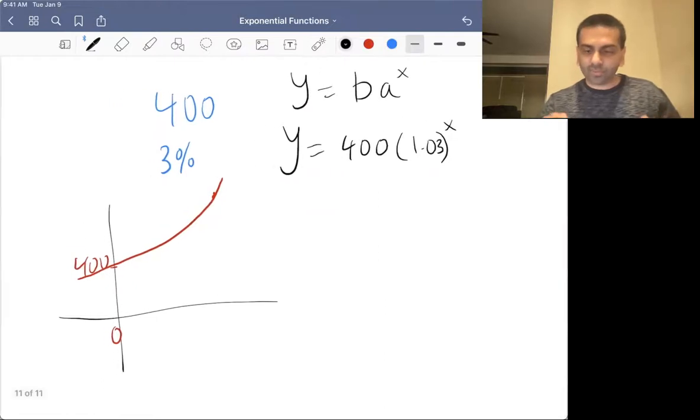So essentially, how do we get this A? This B is pretty straightforward. That's just the initial value. So how do you get the A? Well, let's compare it to the M that you're familiar with in lines, slope. For slopes, if you're growing, it's a positive slope, and if you're decreasing, it's a negative slope.